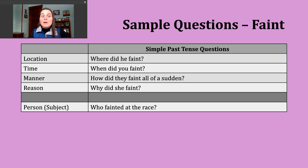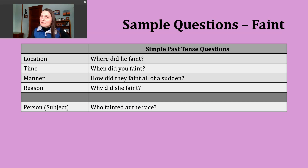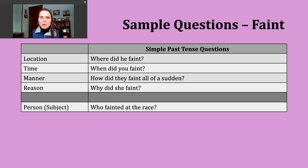Another question word you might encounter is about manner — we use how for that. An example: how did they faint all of a sudden? Another very common question word is why, W-H-Y, which asks for a reason. Many times in an answer you're going to hear because — why and because frequently go together. An example: why did she faint? We might want to know what medical reason or what conditions caused this.